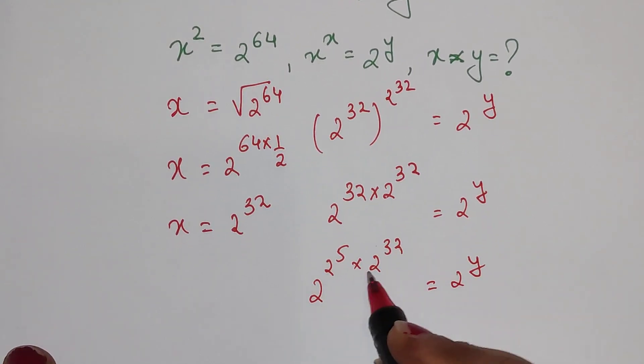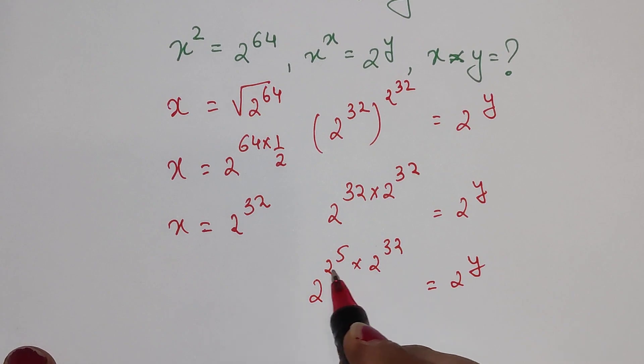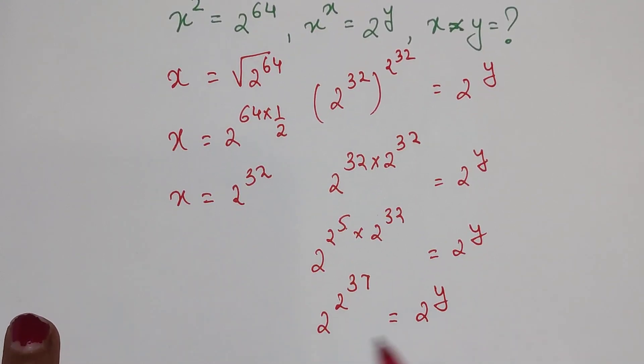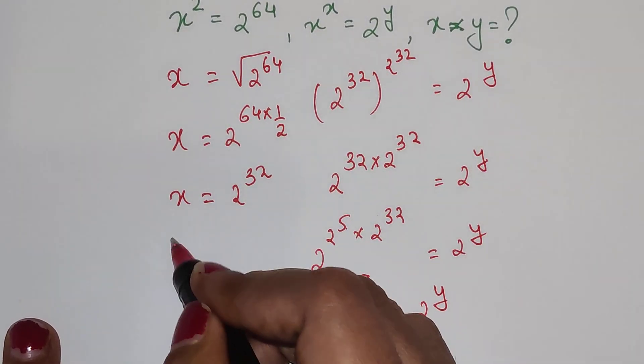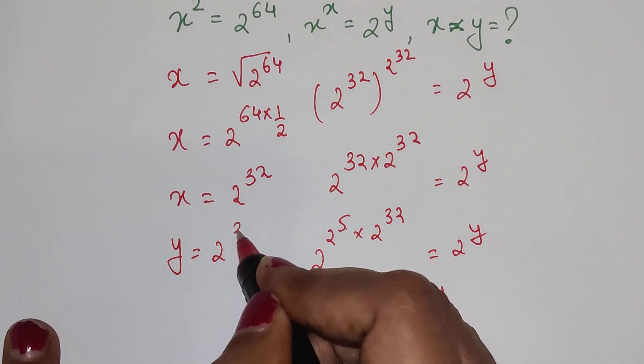When the bases are the same, you can directly add the exponents. So we get 2^(5 + 32) = 2^37, which equals 2^y. Since the bases are the same, y = 2^37.